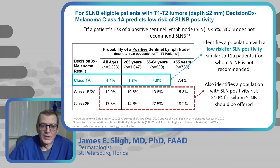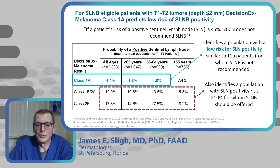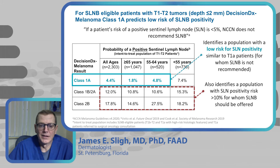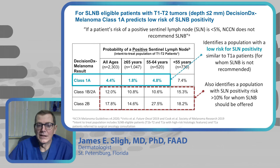In either age group, patients with class 2B or intermediate risk classifications (1B and 2A) all have greater than 10% sentinel lymph node biopsy positivity regardless of age — these patients should definitely be referred to surgical oncology. You could consider excluding those who test as class 1A. Medicare is now approving the use of this assay in the greater than 65 age group for making sentinel lymph node biopsy decisions.